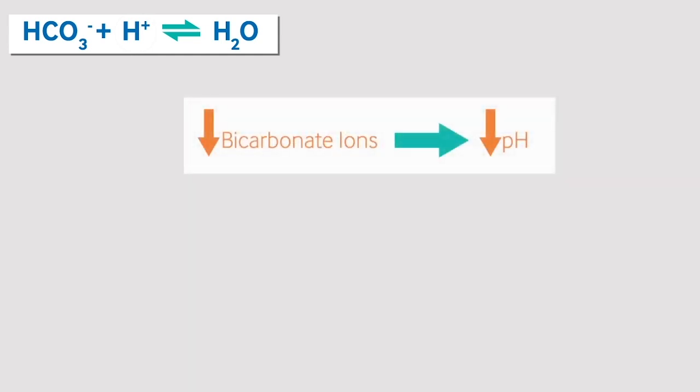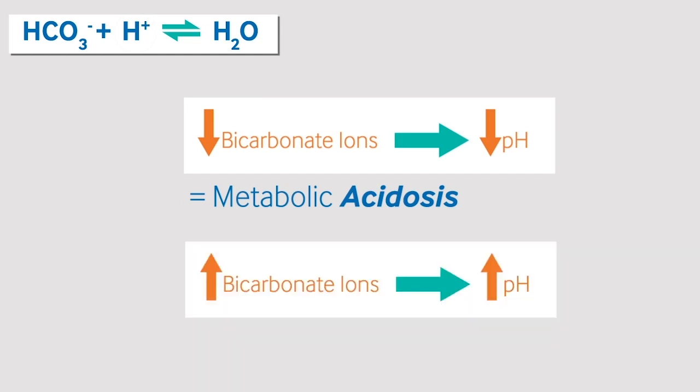A low bicarbonate concentration would suggest acidosis — this is where either there is an increase in acid in the blood, or there is insufficient generation of bicarbonate ions in the kidneys. A high concentration of bicarbonate ions would suggest alkalosis, where either there is a loss of hydrogen ions or an abnormal increase in bicarbonate ions.